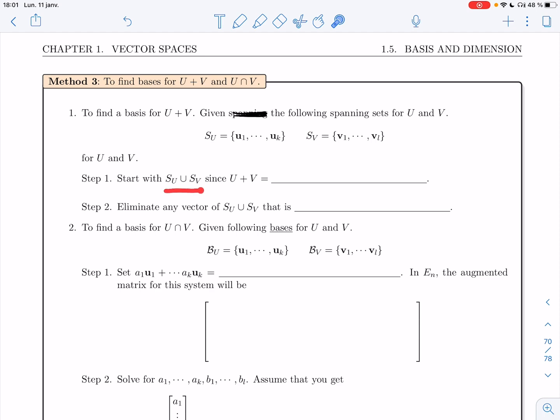All right, so you start with SU union SV because, as we mentioned in the example, U plus V is the span of u1, ..., uk, v1, ..., vl. Notice that this works not just in R^n, but in any vector space. Then you eliminate any vector of the union that is a linear combination of the previous ones.